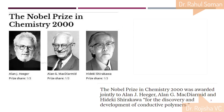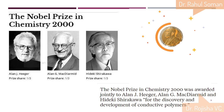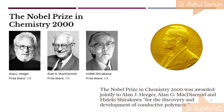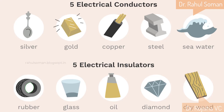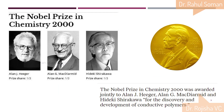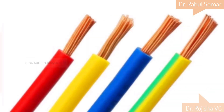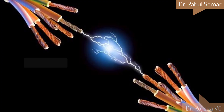The Nobel Prize in Chemistry was awarded for the discovery and development of conductive polymers, because this is a very important discovery. It changed the convention, as up to that point it was thought that polymers could only be used as insulators. Think simply about an electric wire — a metallic wire covered with a polymeric material, plastic, where plastic acts as an insulator and does not conduct electricity.